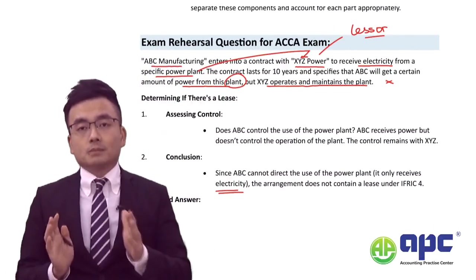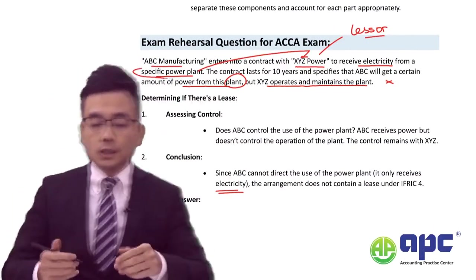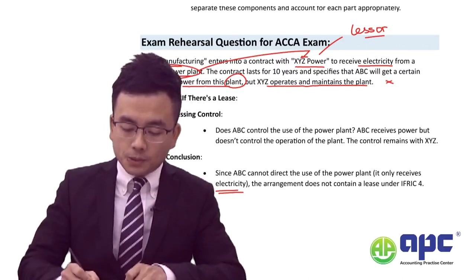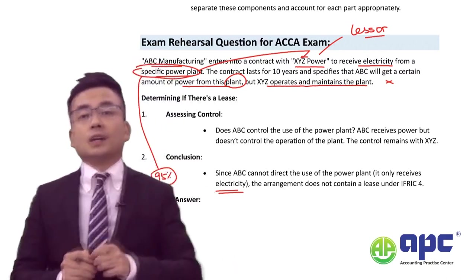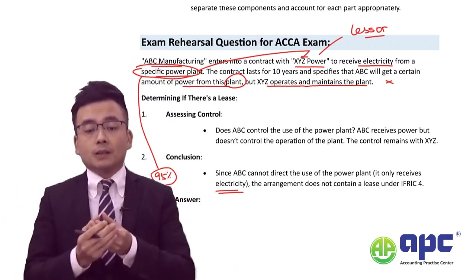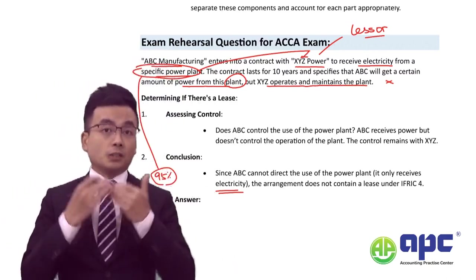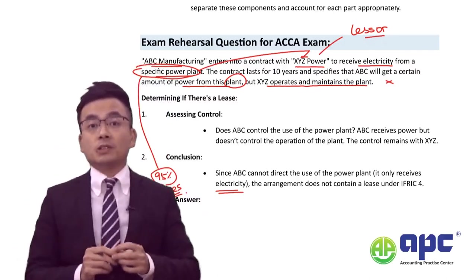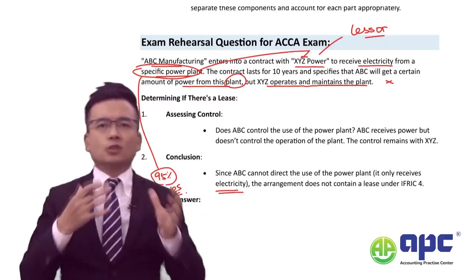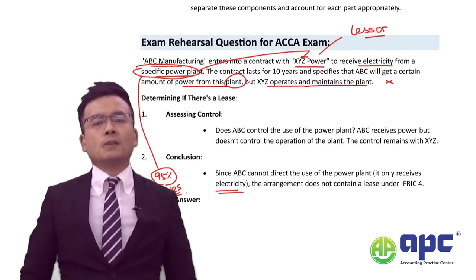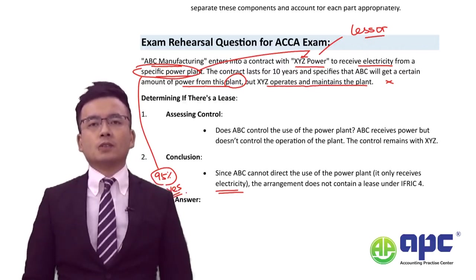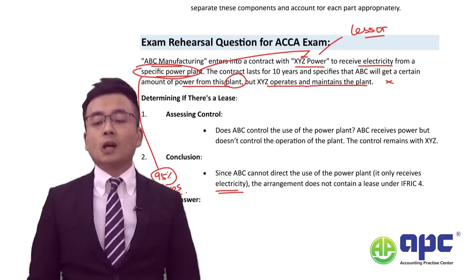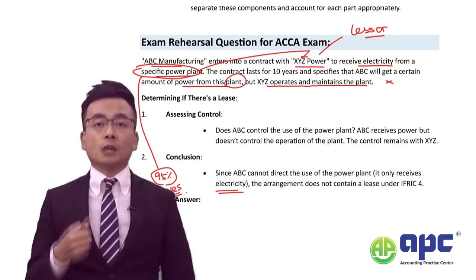However, if we can determine that 95% of the electricity from this specific power plant would only be supplied to our company, then yes, there would be a lease component inside. So the 95% principle is important to understand. However, it is highly unlikely that we would get 95% from a specific power plant, so the answer remains no — this does not contain a lease.